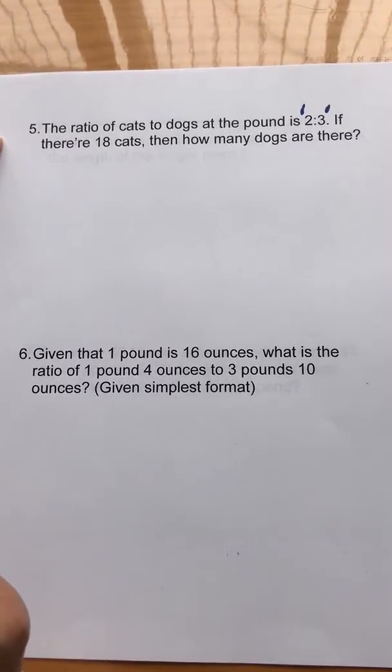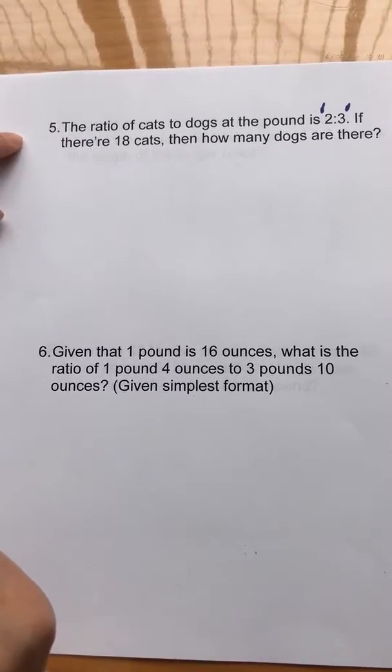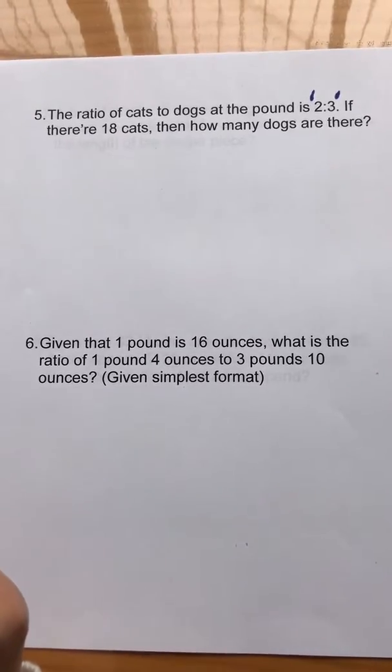Number five, the ratio of cats to dogs at the pond is two to three. If there are 18 cats, then how many dogs are there?